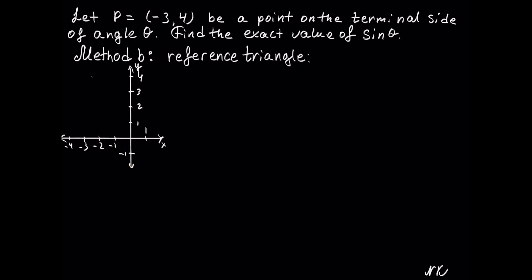If you do not remember the formulas, this problem can be done using a reference triangle, which begins by plotting the point on the x and y-axis. Negative 3, 4 will be around here, in the second quadrant. The angle is always at the origin, so let's connect the point with the origin. The reference angle is always with the x-axis, so theta will be here. To complete the reference triangle, we drop the perpendicular to the x-axis.